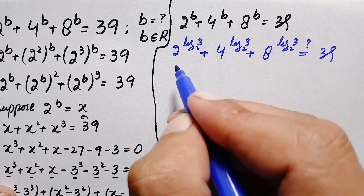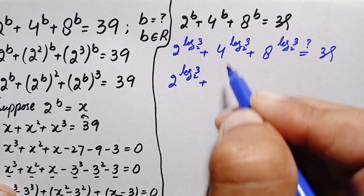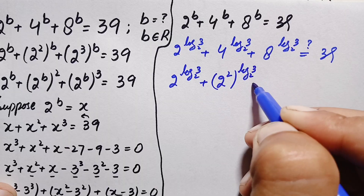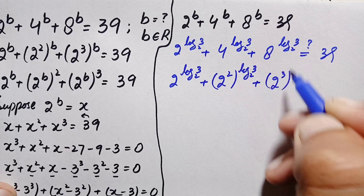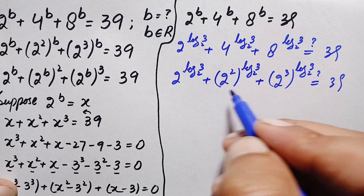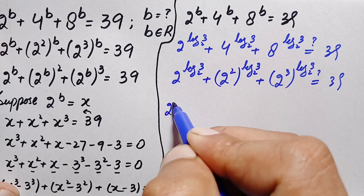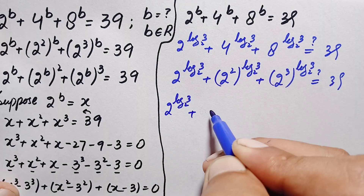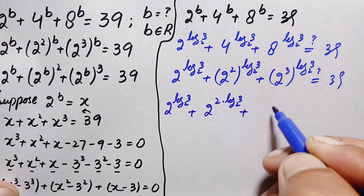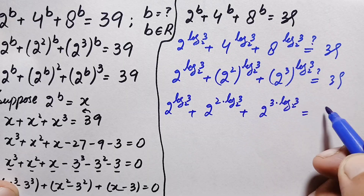Simplifying the left-hand side: 2 raised to power log₂3, plus 4 written as 2 squared raised to power log₂3, plus 8 written as 2 cubed raised to power log₂3, equals 39. Using the exponential identity to multiply the powers, this becomes 2 raised to log₂3, plus 2 raised to 2·log₂3, plus 2 raised to 3·log₂3, equals 39.